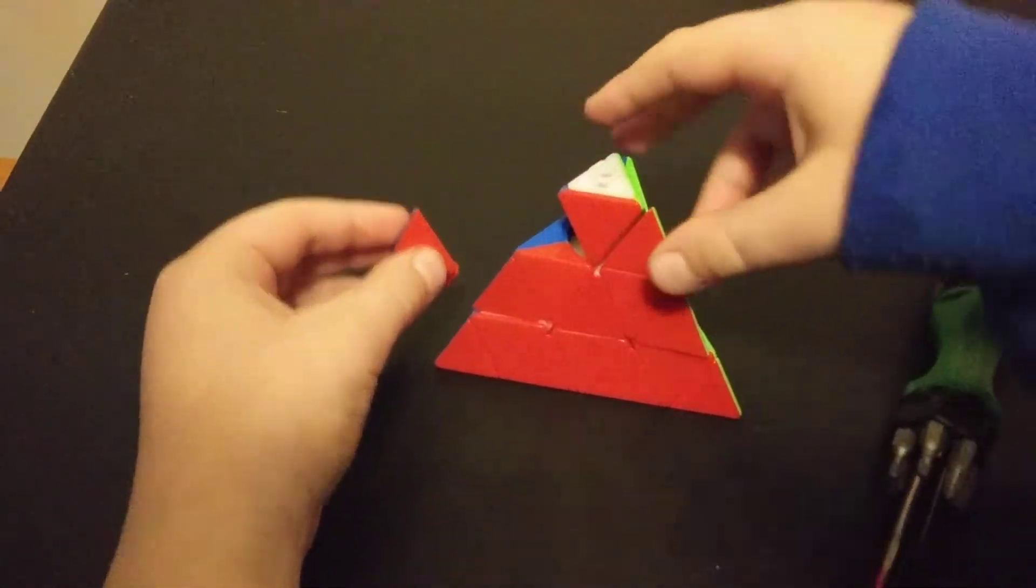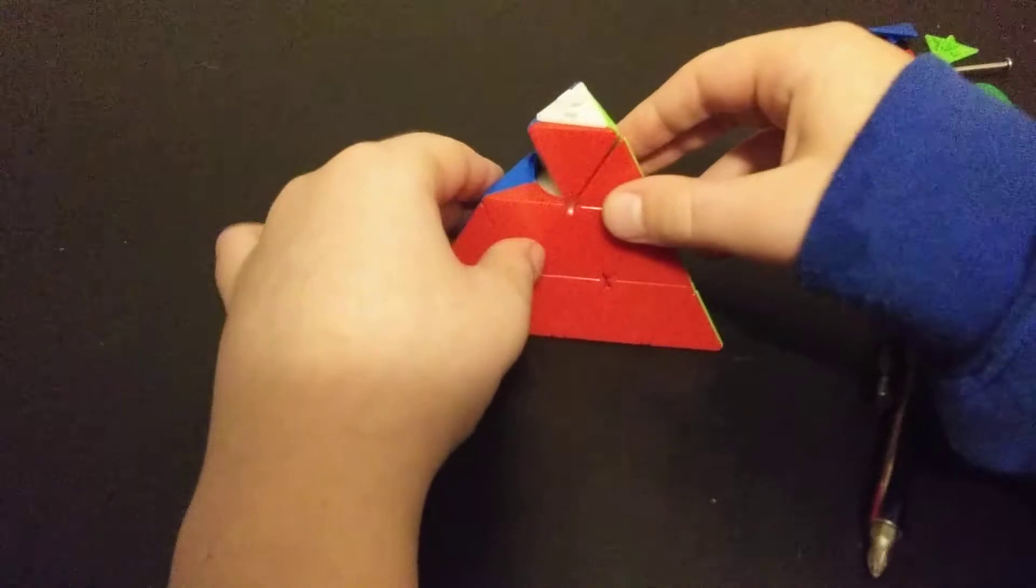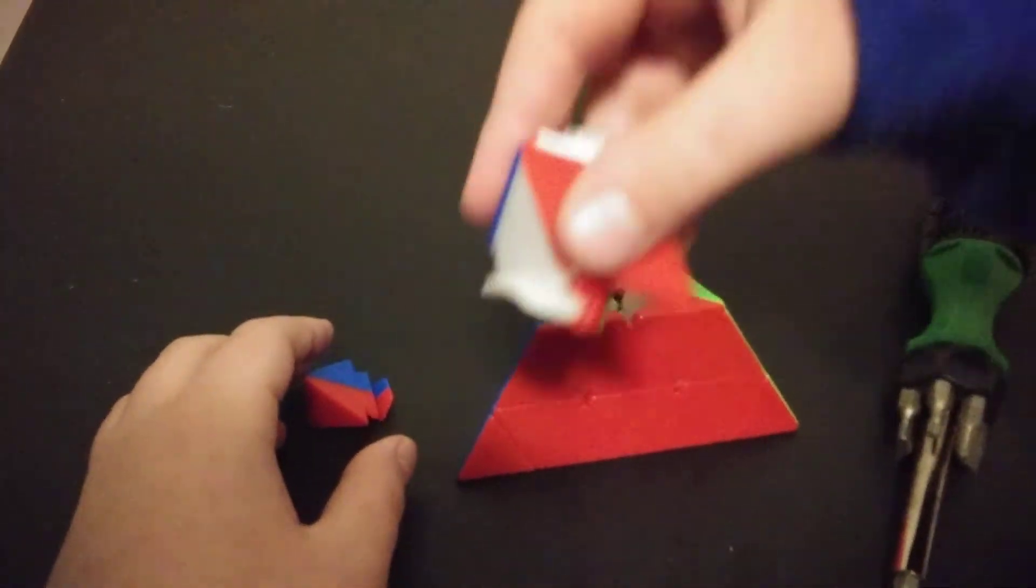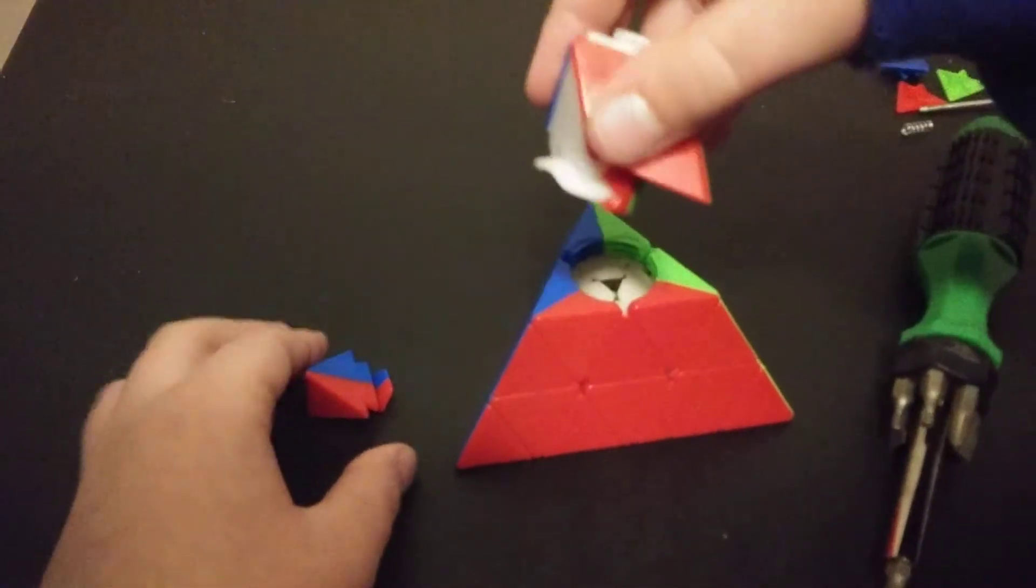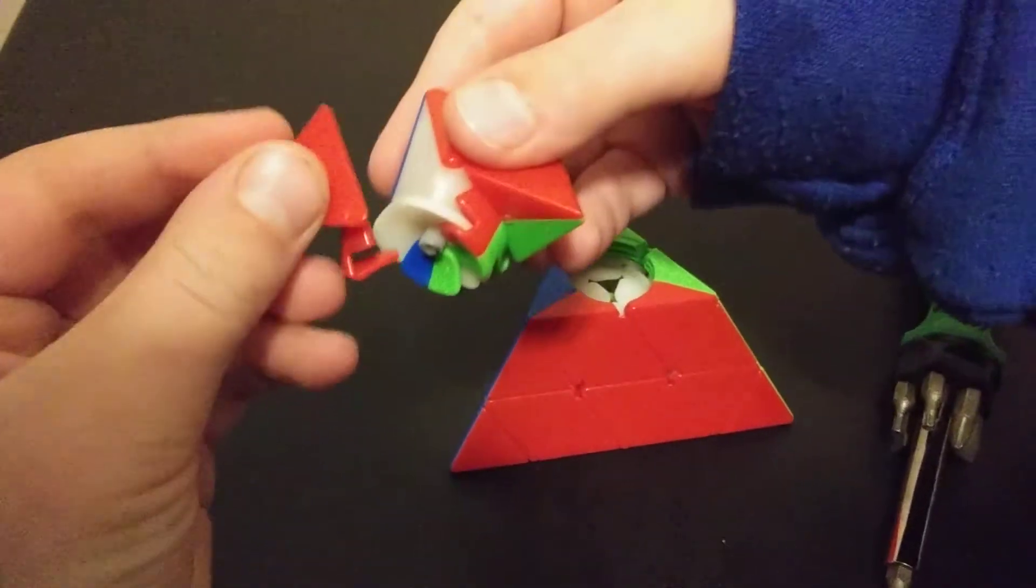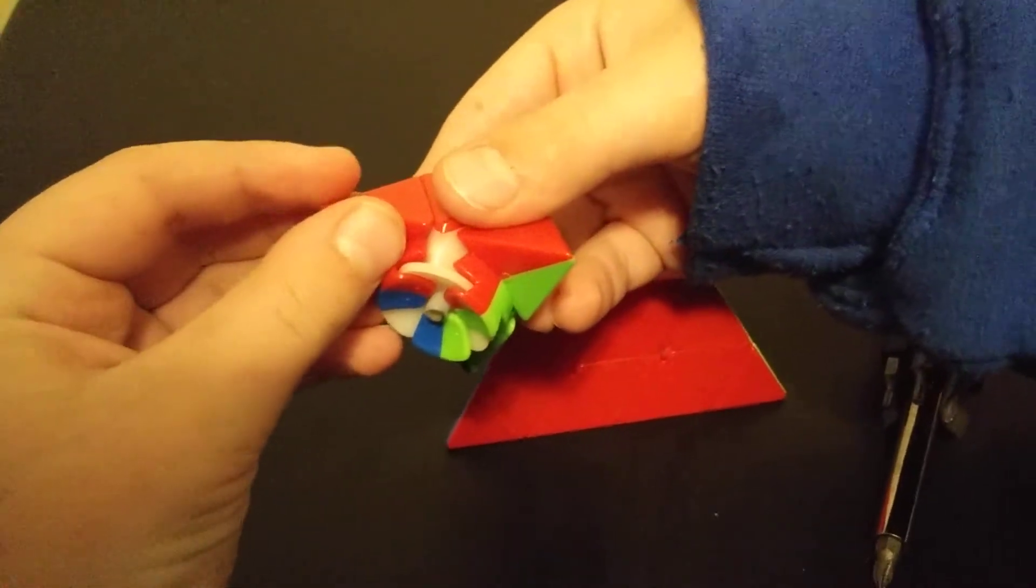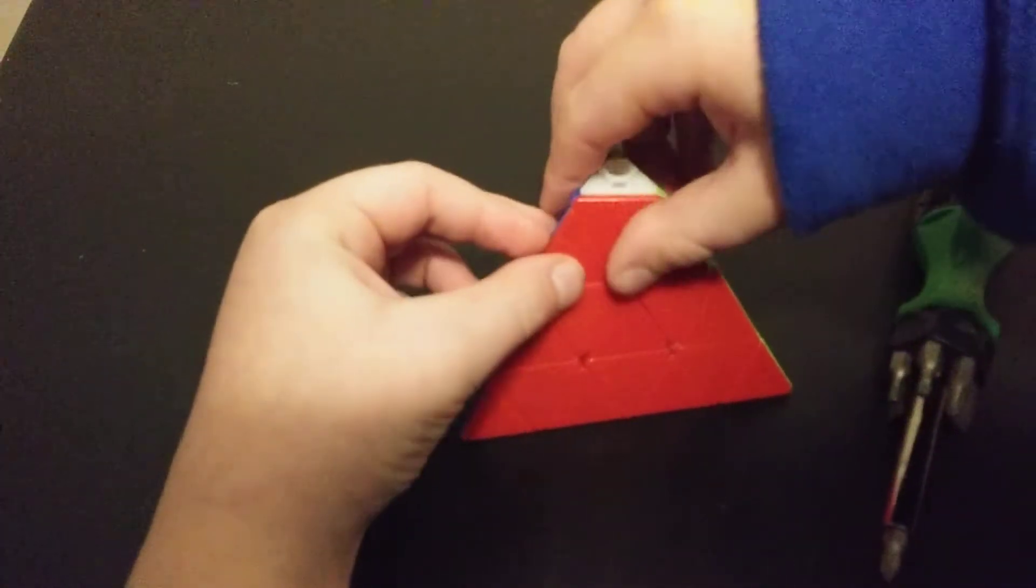So just to repeat that, because that was kind of a weird step. We took out the screw and the spring. Now we lift up this part, like that. Then we take this popped piece and put it under, like this. And then put the whole thing back.